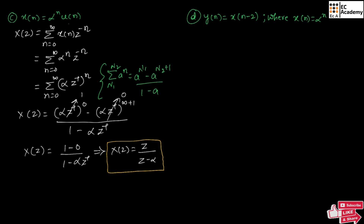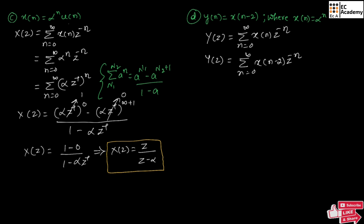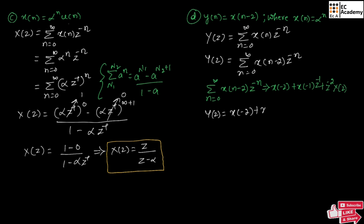Now let us consider the next sequence and find the unilateral Z transform. The unilateral Z transform is Y of z equal to summation from n equal to 0 to infinity of x of n times z to the power of minus n. We can write Y of z equal to summation from n equal to 0 to infinity of x of n minus 2 times z to the power of minus n. From our previous discussion, summation of x of n minus 2 times z to the power of minus n equals x of minus 2 plus x of minus 1 times z to the power of minus 1 plus z to the power of minus 2 times X of z. Using this, Y of z equals x of minus 2 plus x of minus 1 times z to the power of minus 1 plus z to the power of minus 2 times X of z.